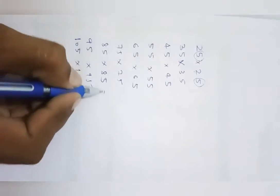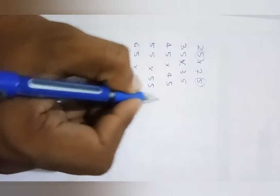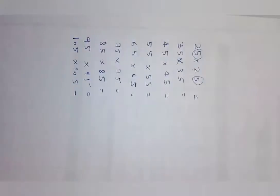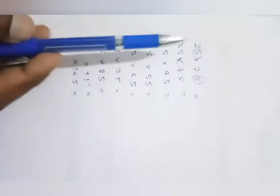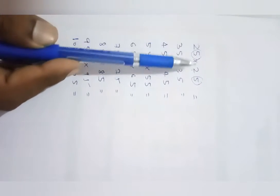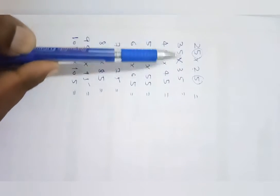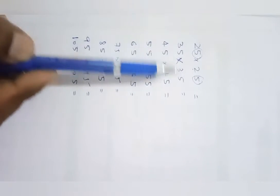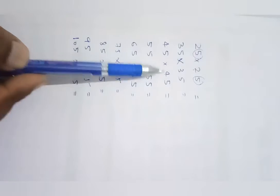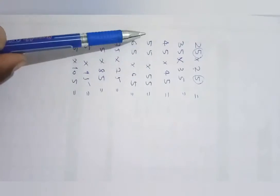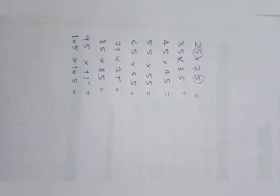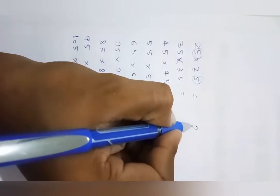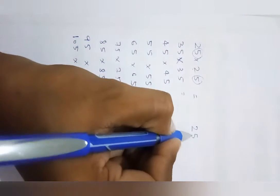Whenever you get these kinds of questions — in which the ones-place digit is 5 and the tens digit is the same on both sides, like tens digit is 2 and 2, or 3 and 3 — you can write down the direct answer. In the last two digits, always write 25.